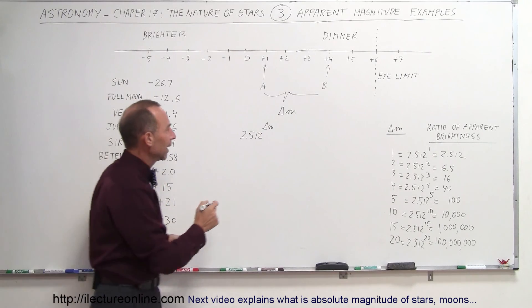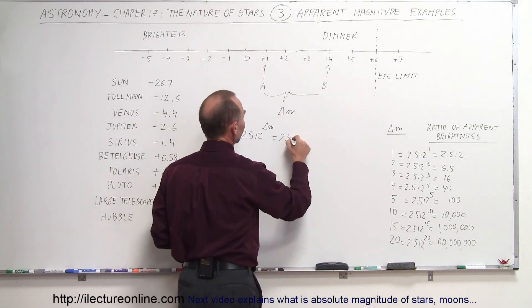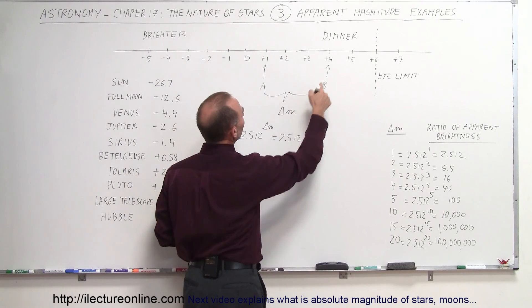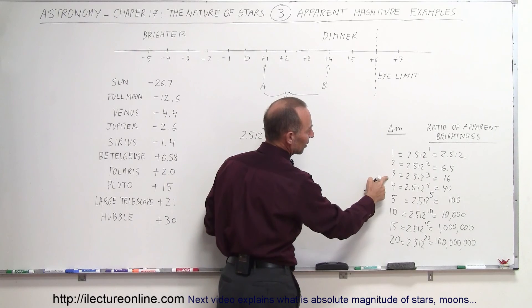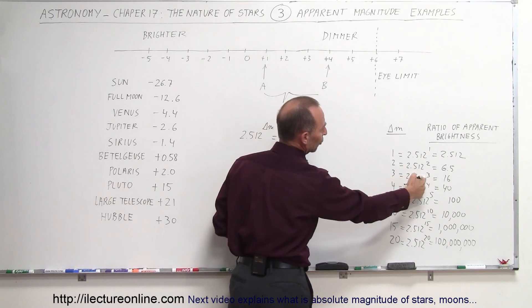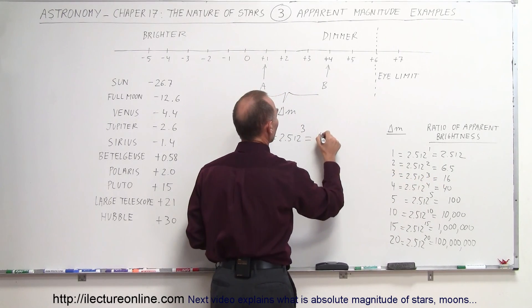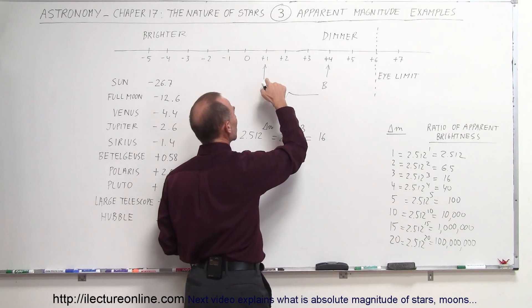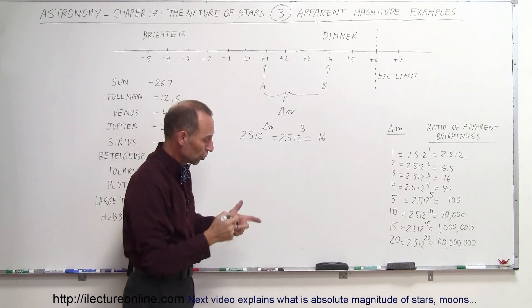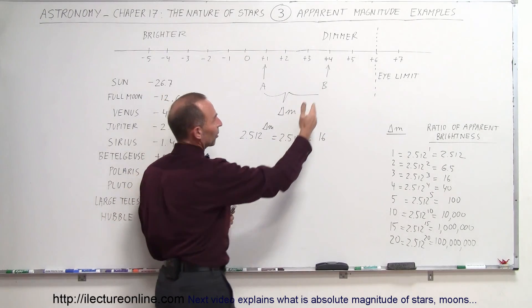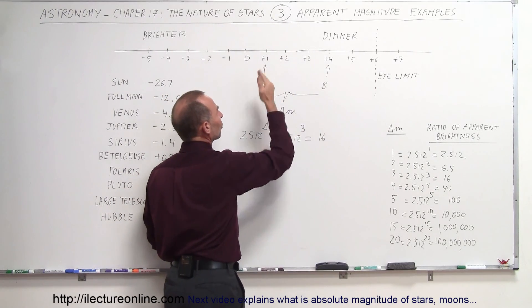This would be equal to 2.512 raised to the 4 minus 1, which is third power. 2.512 to the third power is about 16, which means that star A is the brighter of the two stars and is 16 times brighter than star B. In other words, you would need 16 stars like star B to put out as much light as one star of type A.